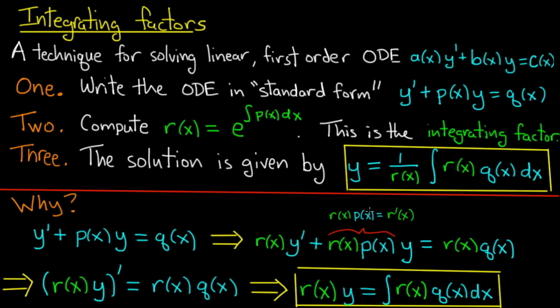This right here is the real crux of the argument. What we notice now is that r(x) times y' plus r'(x) times y looks like the product rule applied to the product r(x) times y. So we notice that the left-hand side is a derivative. We made the left-hand side of the equation a derivative by multiplying by the integrating factor.